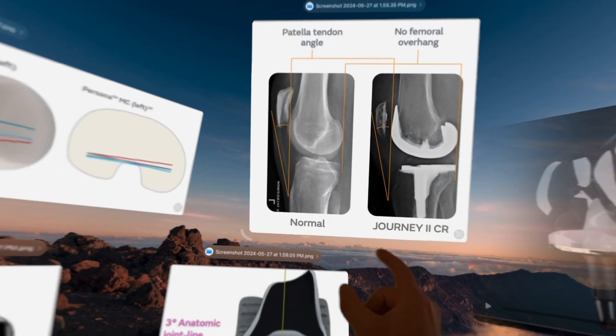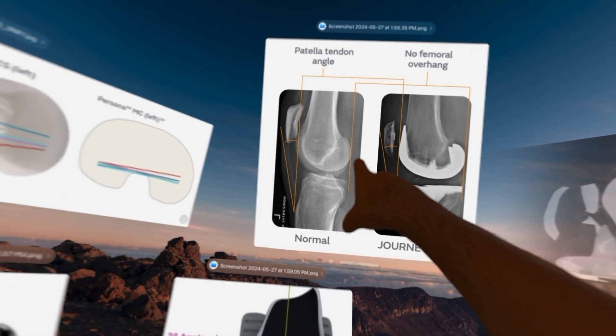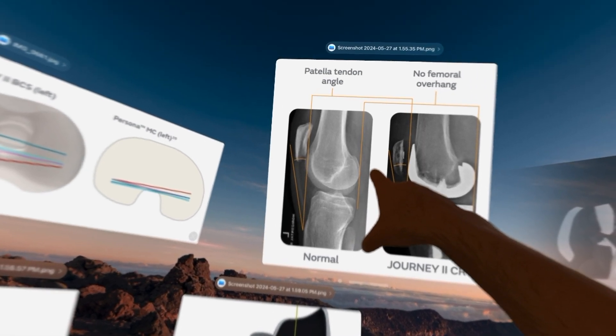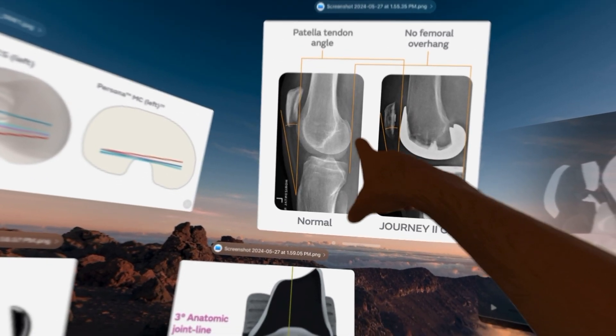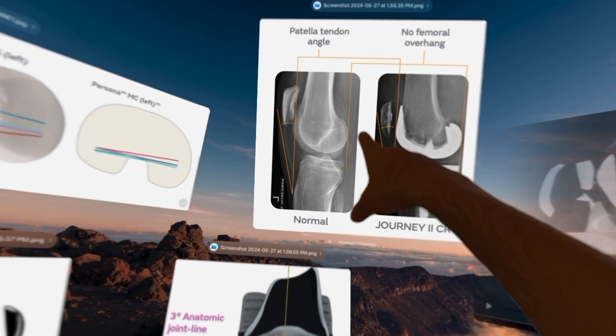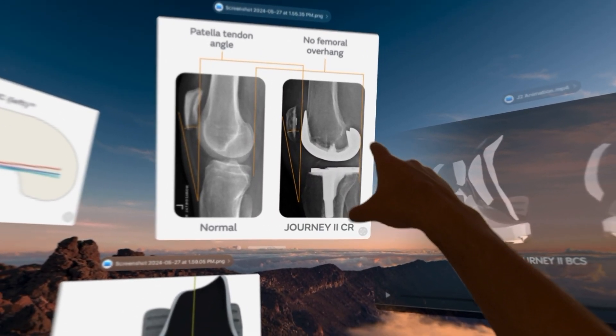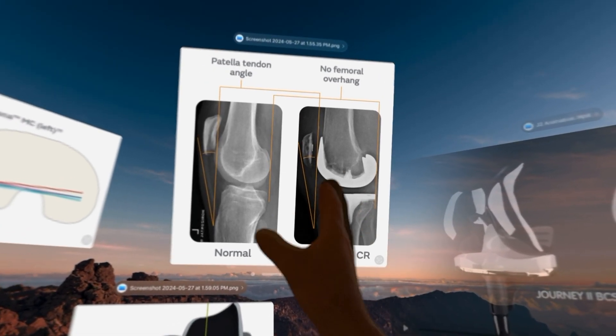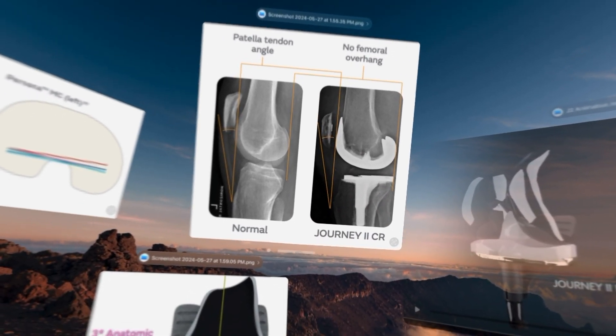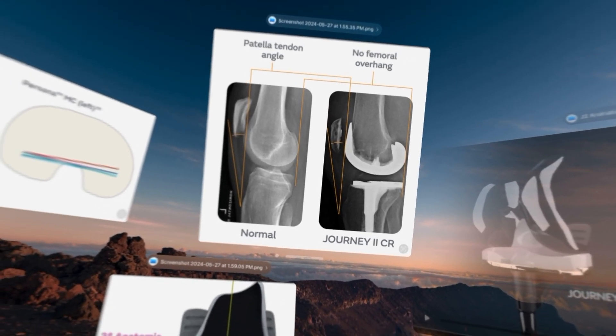So if we look up here, we looked at this earlier. This shows us our normal knee with the back of the femur and the back of the tibia in good alignment. And this is a journey to knee with the back of the femur and the back of the tibia in good alignment. And that restores your patellar kinematics. That actually means that your knee will work better.